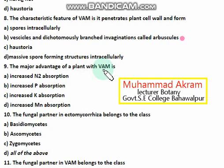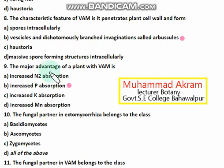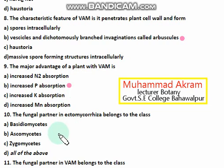The major advantage of plants with endomycorrhizae is increased phosphorus absorption. Option B is the right option — the major advantage of plants with them is increased phosphorus absorption.